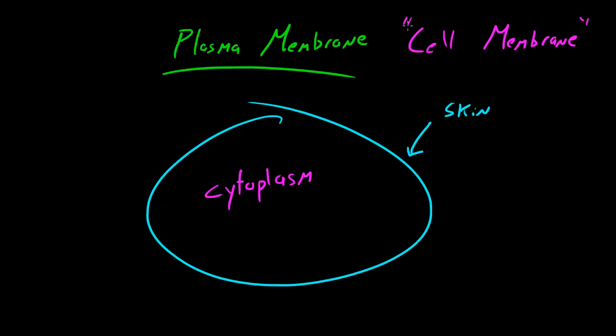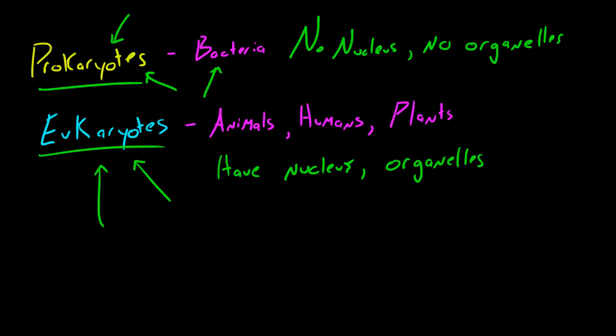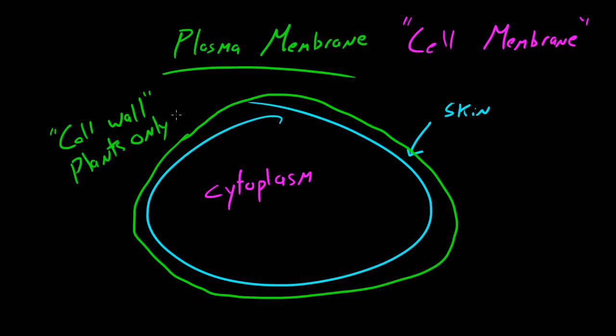I'm typically going to be calling it the plasma membrane because I think that's the more technical term. And another thing that I want to mention is that plant cells have a special thing called a cell wall. So cell wall, plants only. Again, even though humans, animals and plants are all eukaryotes, plant cells and animal cells differ a little bit.